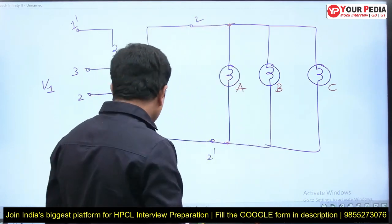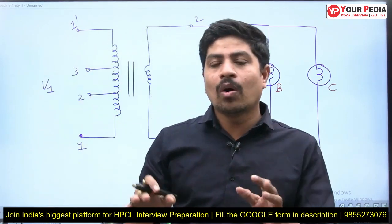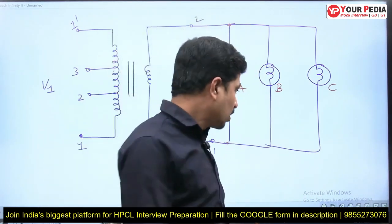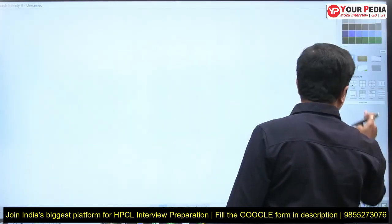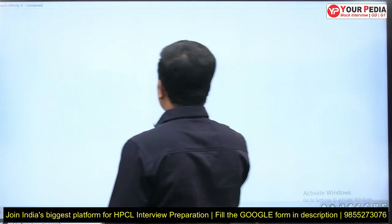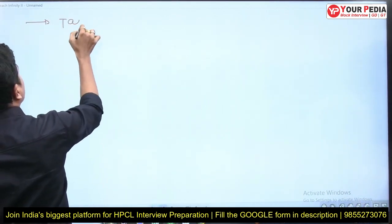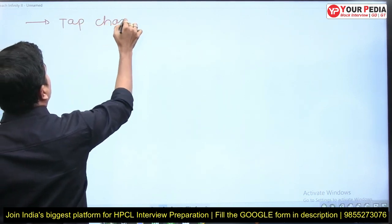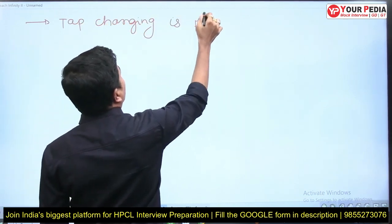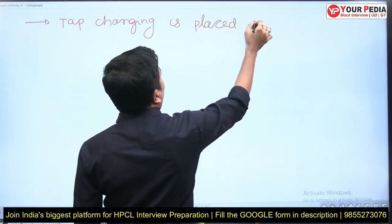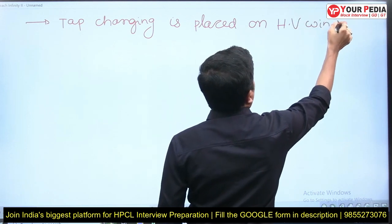The tap changing is kept not on the primary, but on the HV winding. Why? In a transformer construction, the HV winding is kept on top of the LV winding. It is easy to take out the tapping from HV since it is on the top — that is one reason.